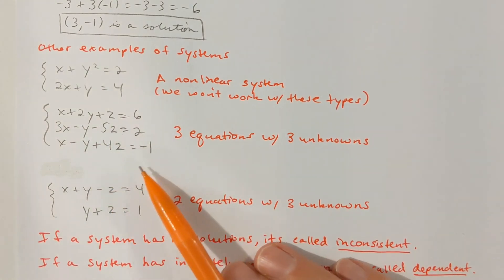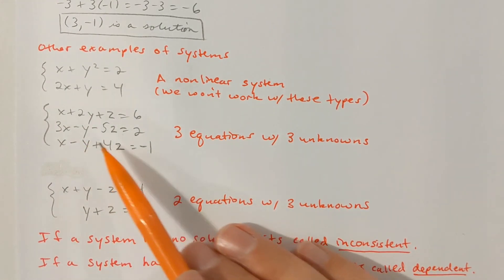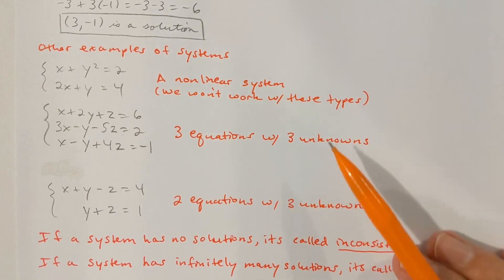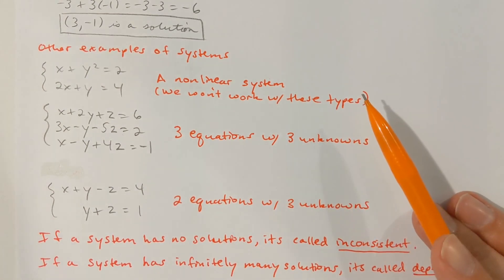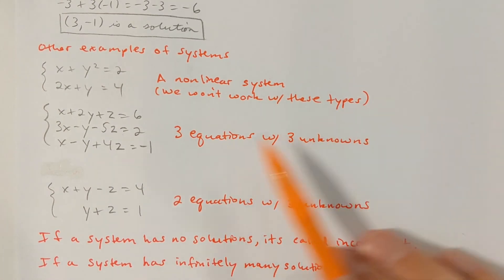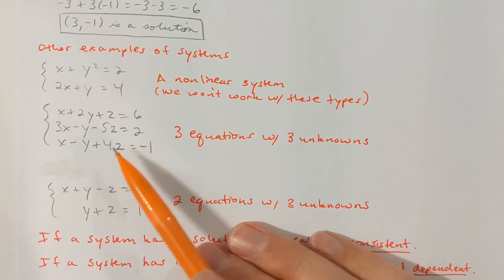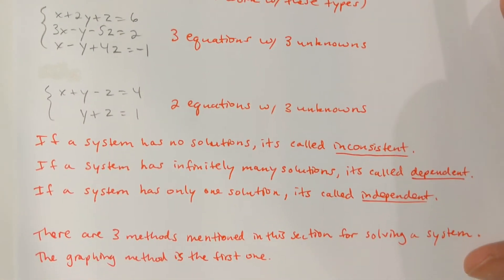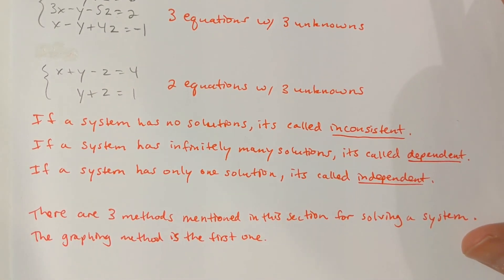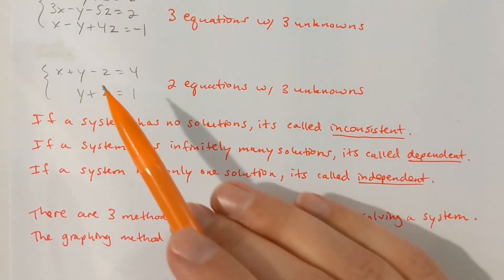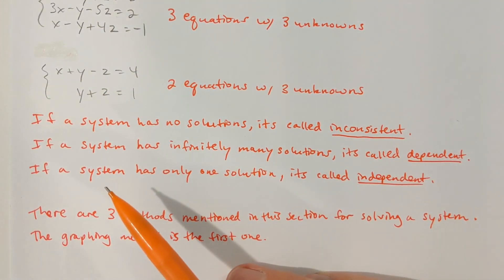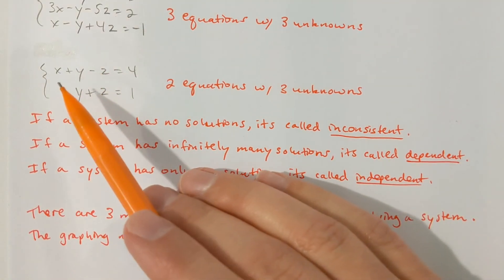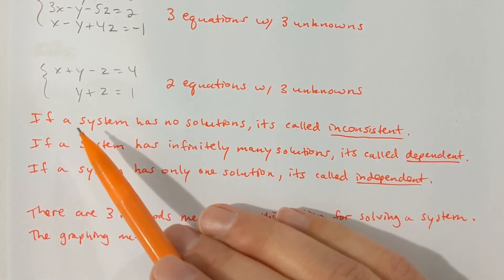Here's a system of three equations with three unknowns. x, y, and z would be the three unknowns. The idea would be the same — find x, y, and z such that all three equations are satisfied at the same time. Also, the number of equations doesn't always have to match the number of unknowns. Here's a system of two equations with three unknowns.